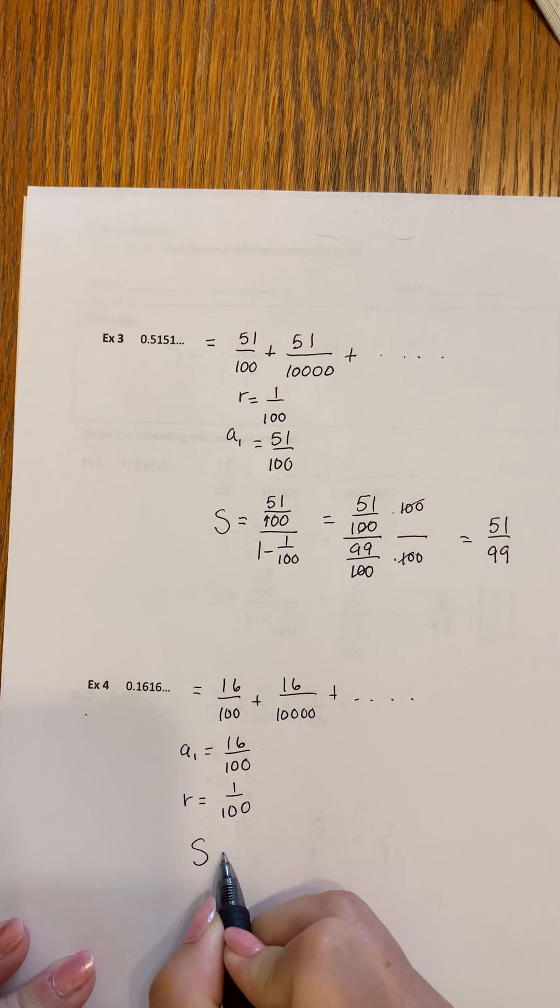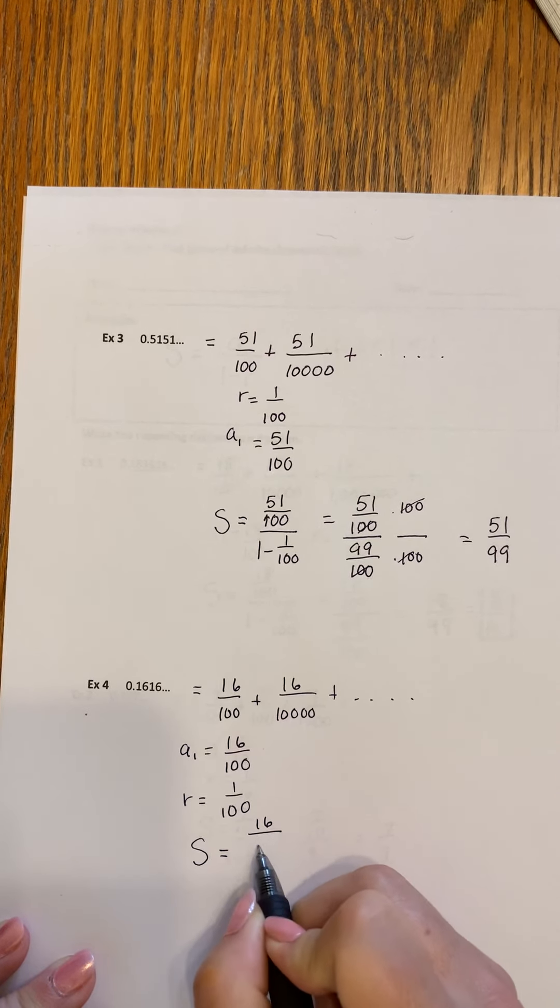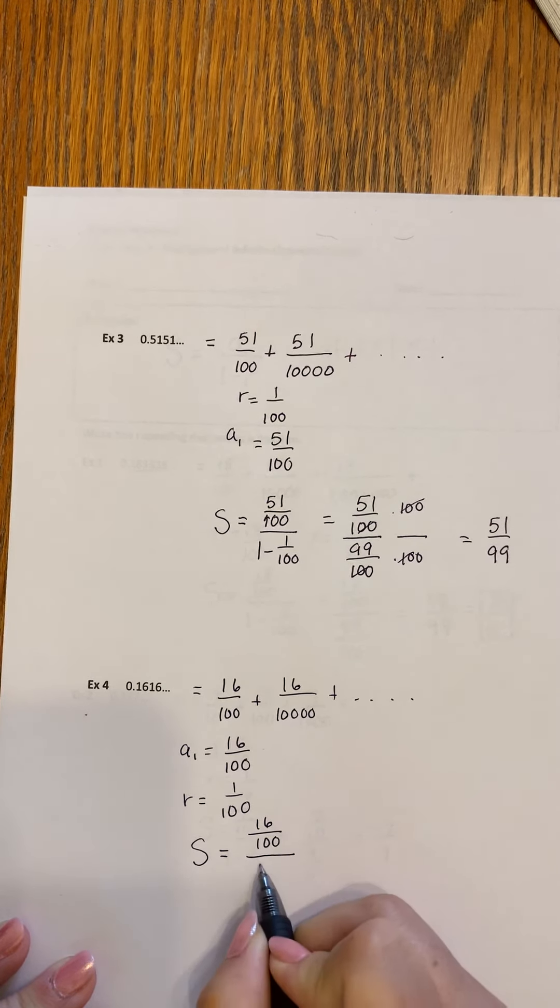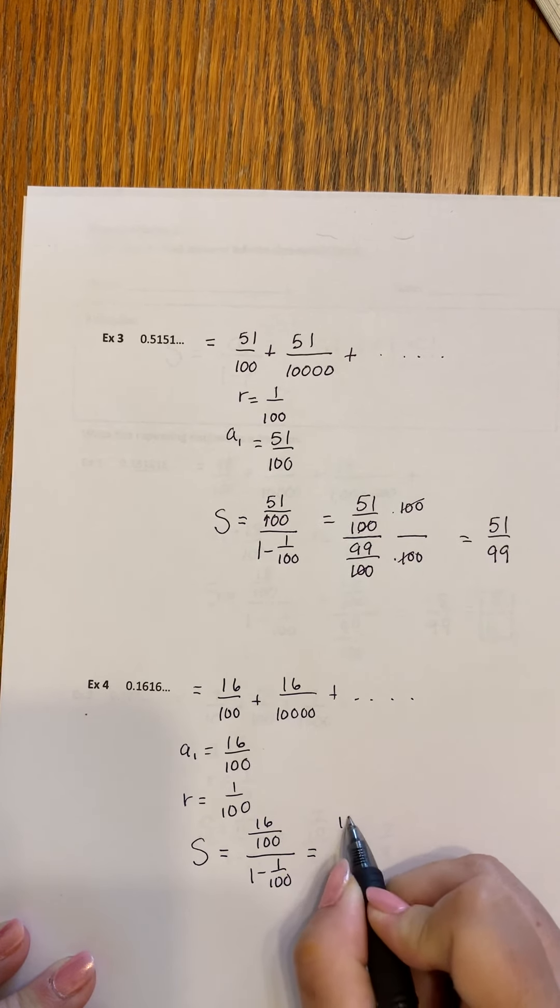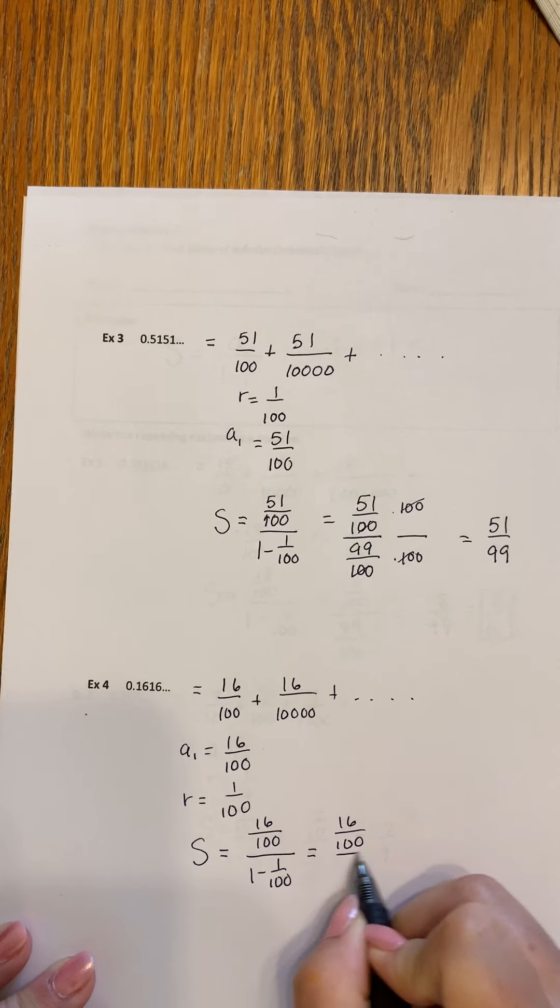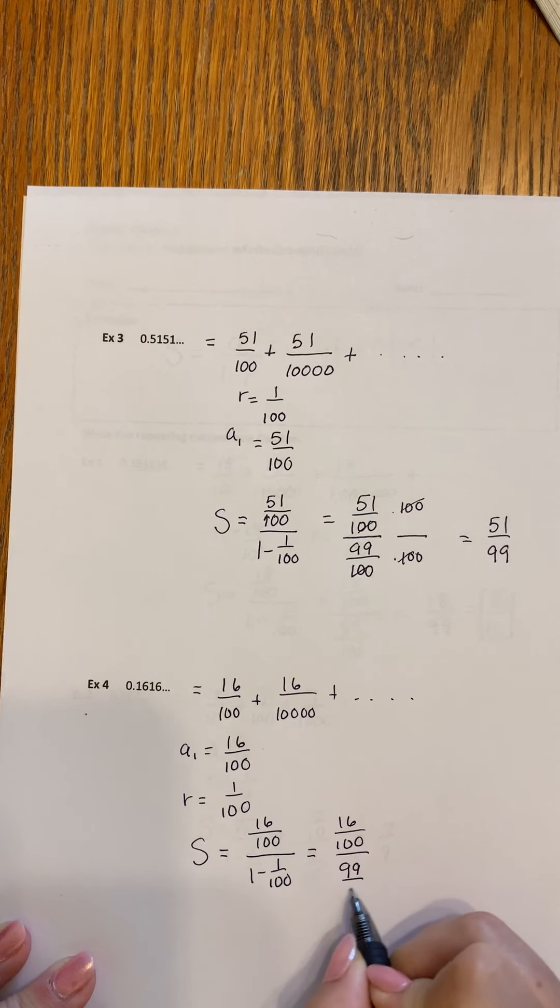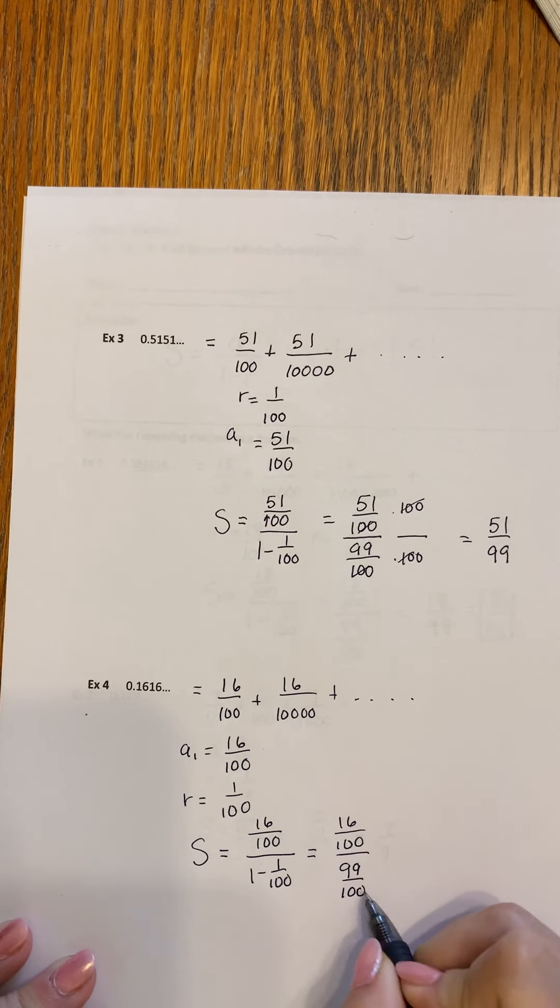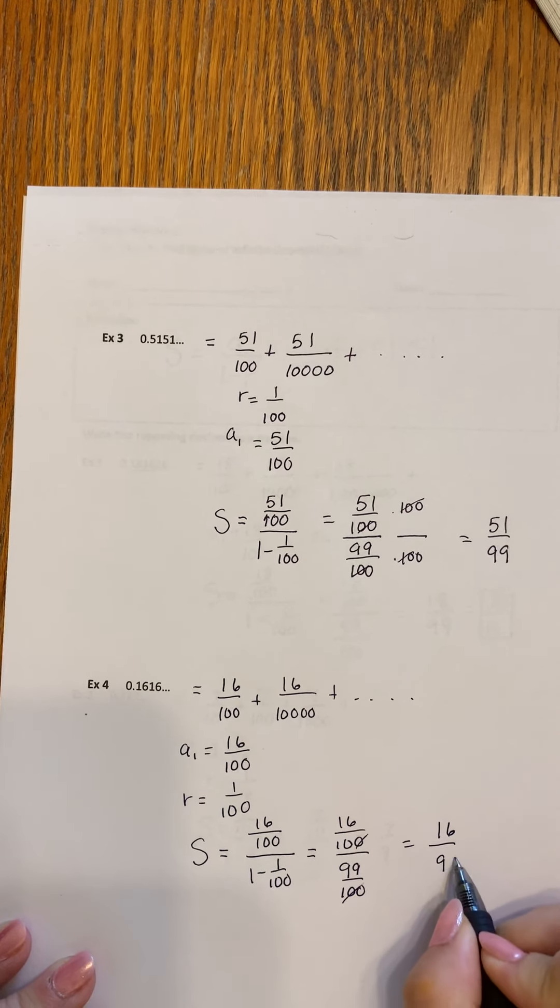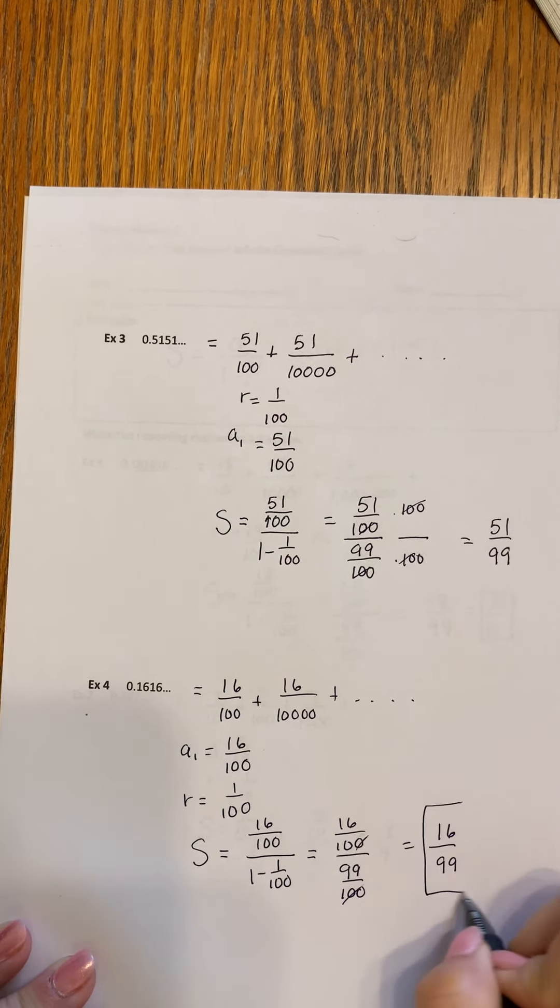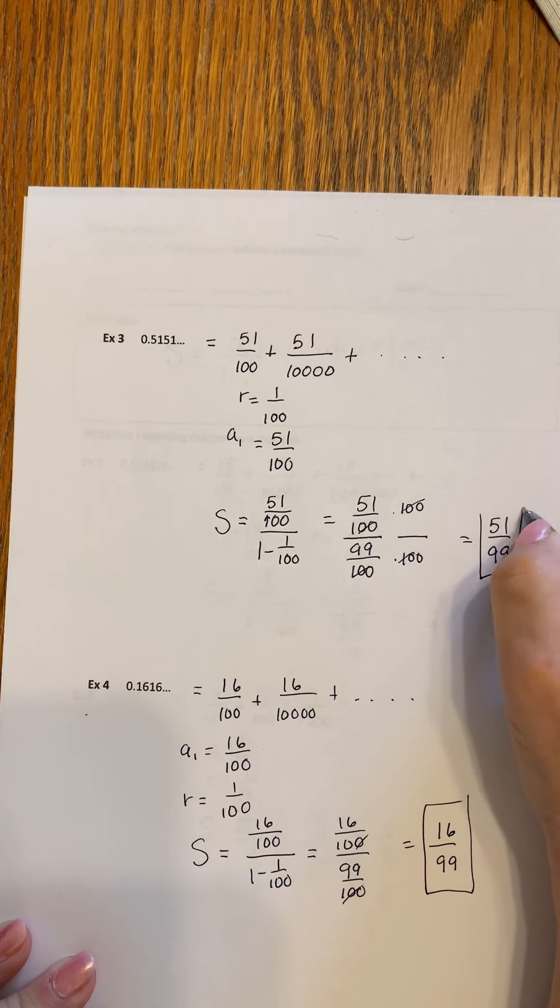Substituting it in, S is equal to 16 over 100 divided by 1 minus 1 over 100. 16 over 100 divided by 99 over 100. And the hundreds cancel, leaving us with 16 over 99. And that does not reduce. They don't have anything in common. So that's our answer here. That's our answer here.